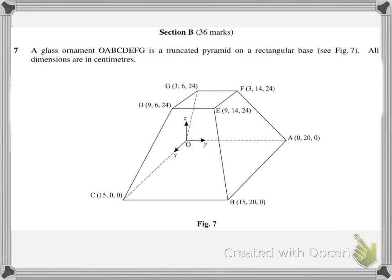Here we have a C4 section B question. There are two questions in section B, each one's worth 18 marks. In this question we have a glass ornament O, A, B, C, D, E, F, G, which is a truncated pyramid on a rectangular base.